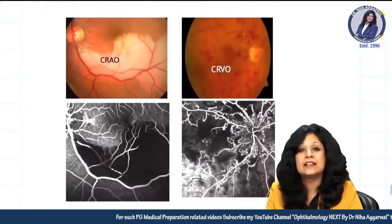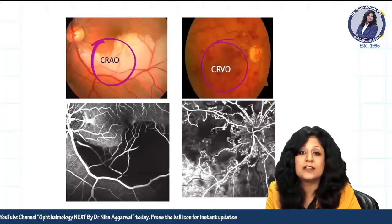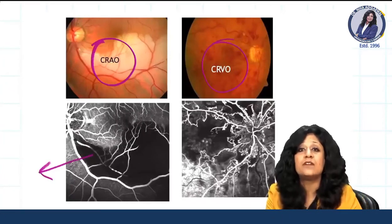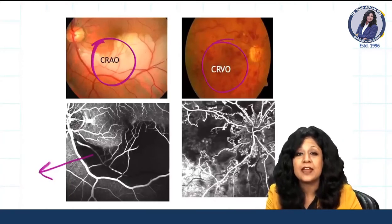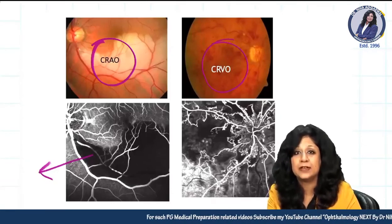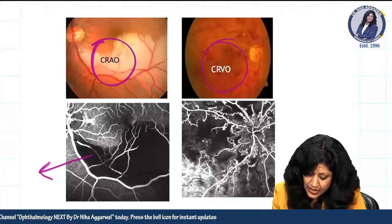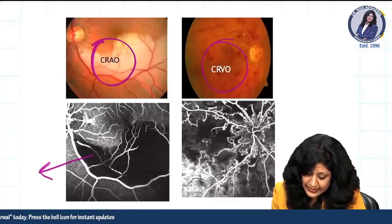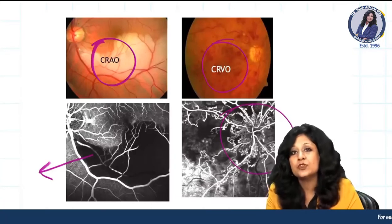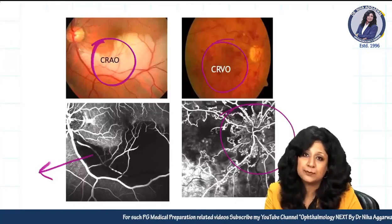In vascular occlusion — CRAO or CRVO — a large area becomes totally black because of the filling defect blocking the fluorescence from the chorocapillaries. In cases of CRVO, you can get alternate areas: hyperfluorescent areas due to neovascularization and hypofluorescent areas due to the masking effect occurring simultaneously.